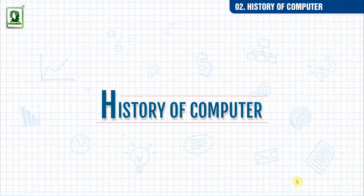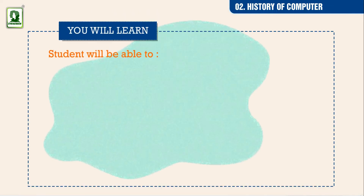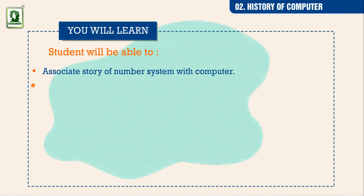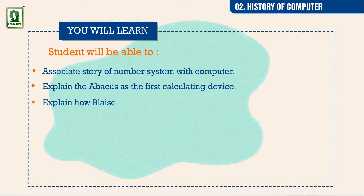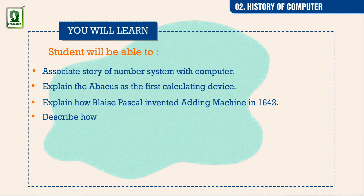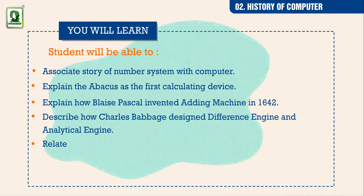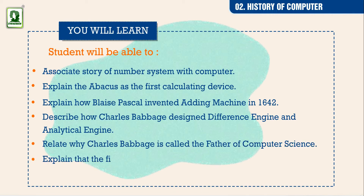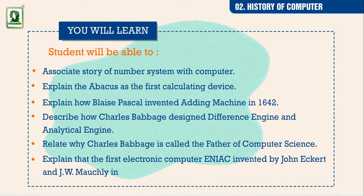History of Computer. Students will be able to: associate the story of the number system with computers, explain the abacus as the first calculating device, explain how Blaise Pascal invented the adding machine in 1642, describe how Charles Babbage designed the difference engine and analytical engine, relate why Charles Babbage is called the father of computer science, and explain that the first electronic computer ENIAC was invented by John Eckert and J.W. Mauchly in 1946.